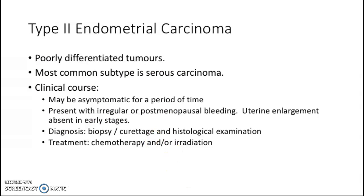Type 2 endometrial carcinoma is usually associated with poorly differentiated tumors, and the most common subtype is serous carcinoma. The patient may be asymptomatic for a period of time and eventually present with irregular or postmenopausal bleeding. Diagnosis is by biopsy, curettage, and histological examination, similar to Type 1, and treatment includes chemotherapy and may include irradiation.